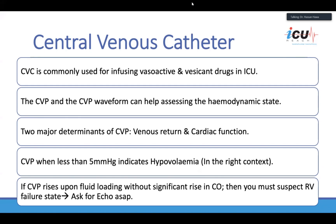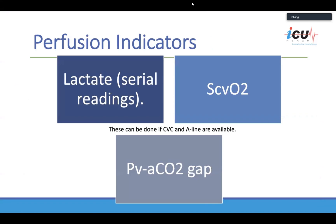Ideally, you should ask for an echo as soon as possible in that situation. Perfusion indicators you can get include serial lactate readings, which are quite helpful to track lactate clearance. You can get the central venous oxygen saturation, which would be a surrogate marker for cardiac output. We will also talk about the CO2 arteriovenous gap as another surrogate marker of blood flow in the circulation.